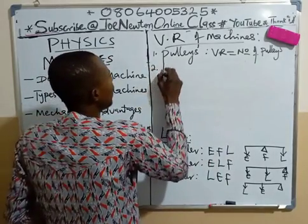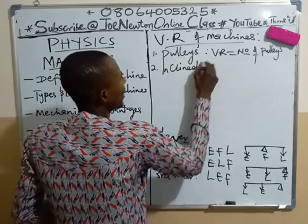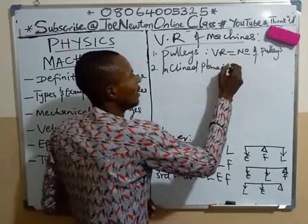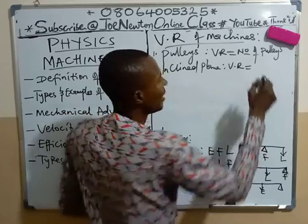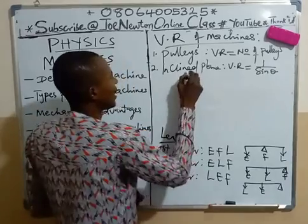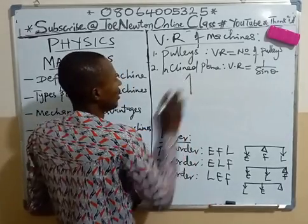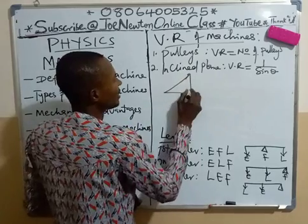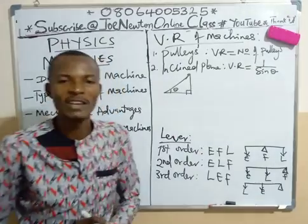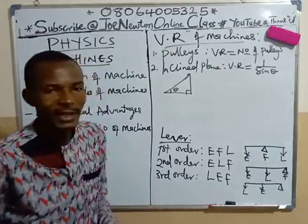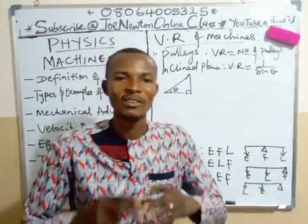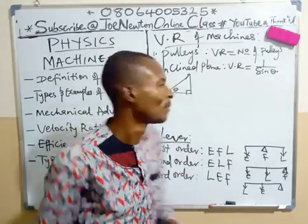For the inclined plane, the velocity ratio is given as one over sine theta. The inclined plane is like a right-angle triangle in its arrangement. So the velocity ratio of the inclined plane is 1 over sine θ.